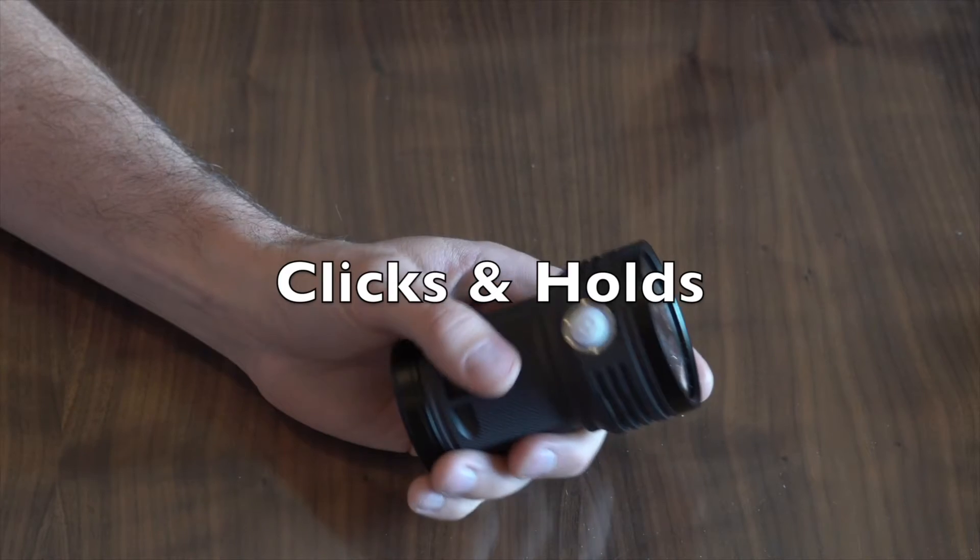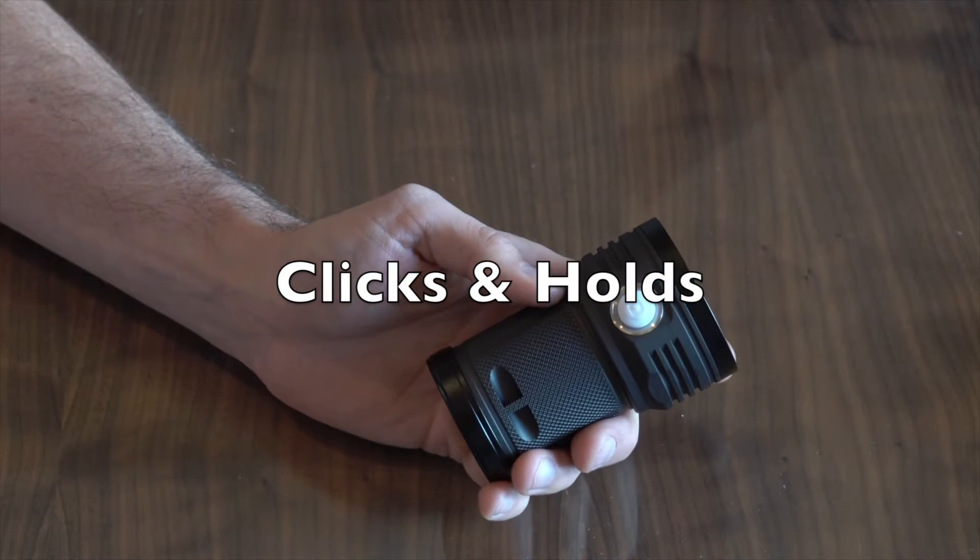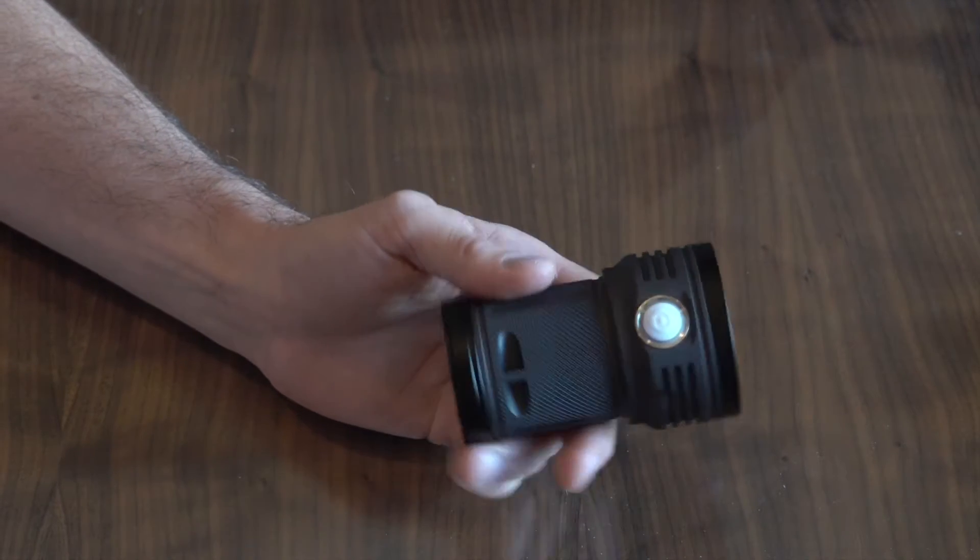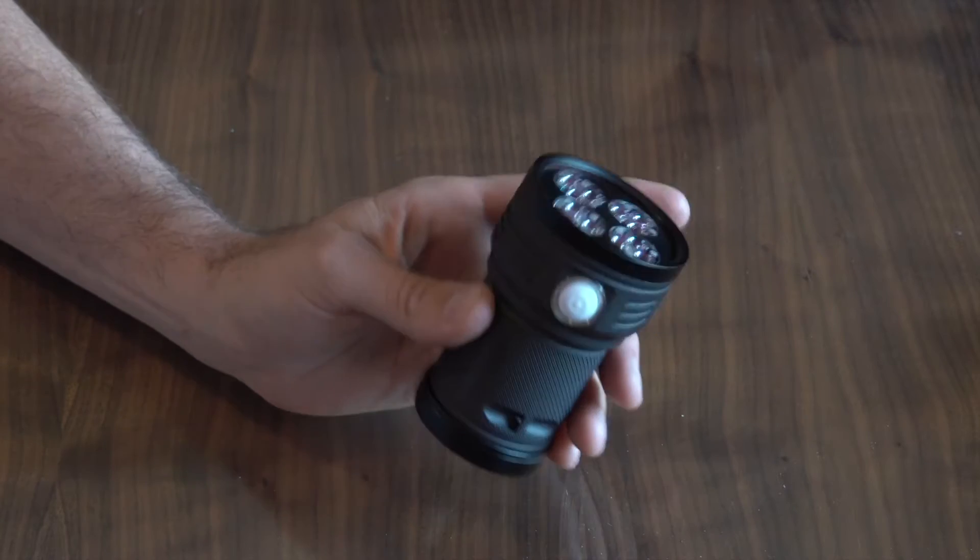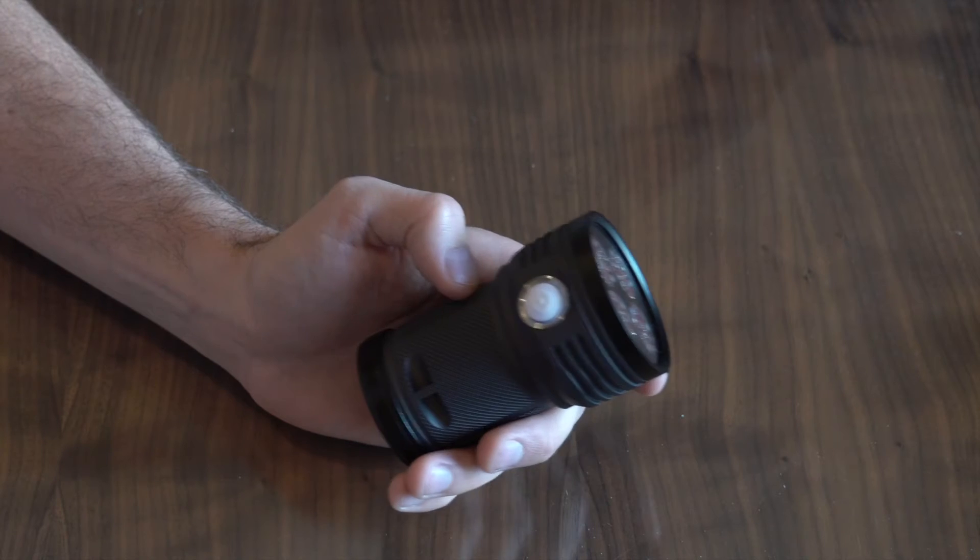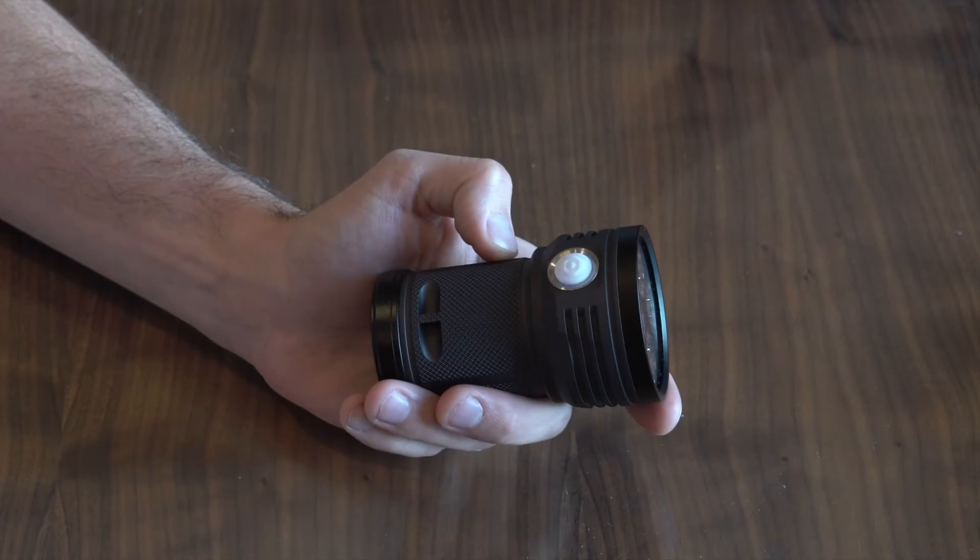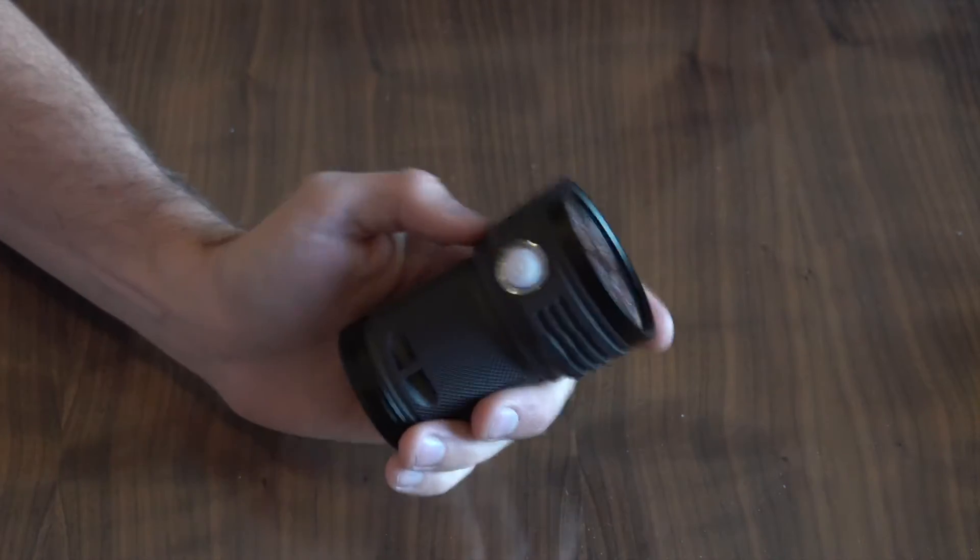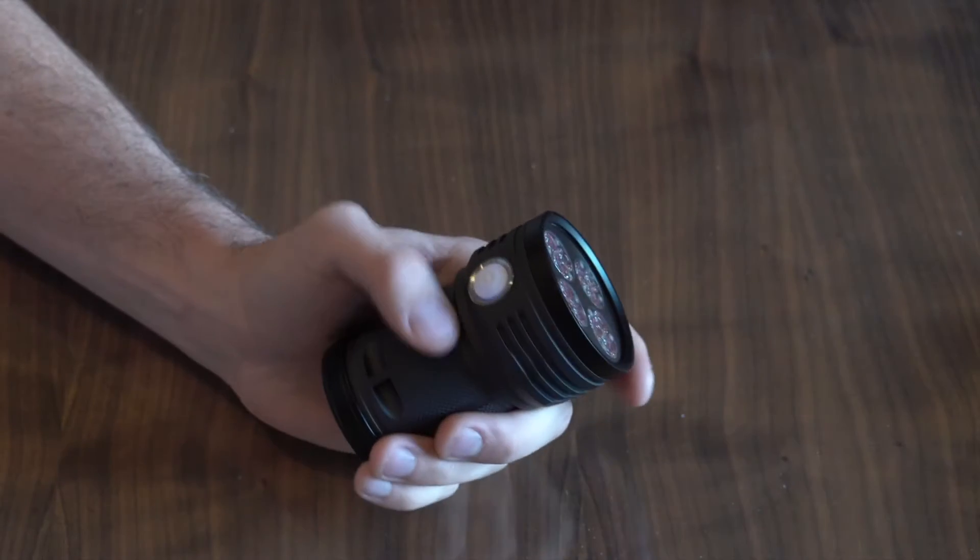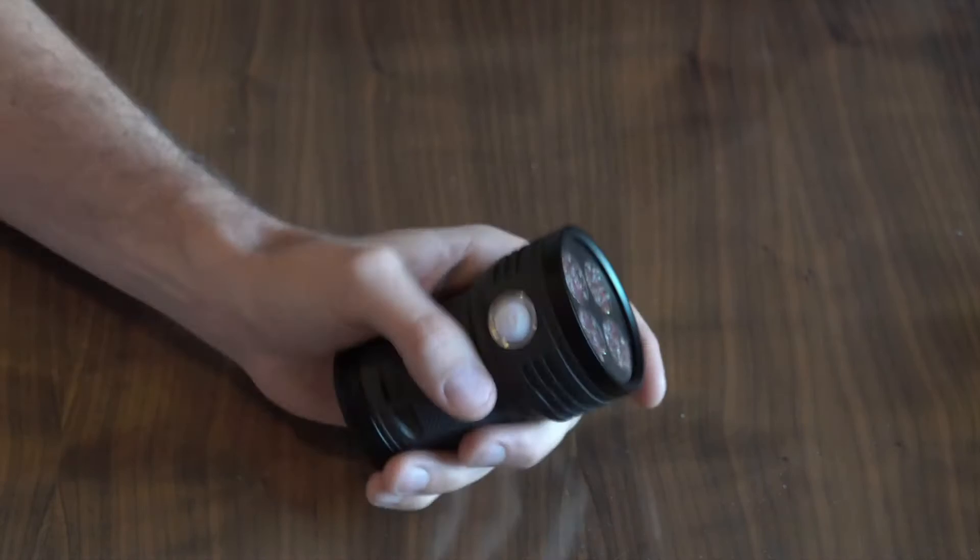The first element of the user interface I would like to address is the system of clicks and holds. A lot of the user interface elements are accessed using a system of clicks and holds. So for example to enter into the minimalist user interface the manual will say nine clicks and hold. When I first saw this I was a little bit confused because I would click it nine times then hold on the ninth click.